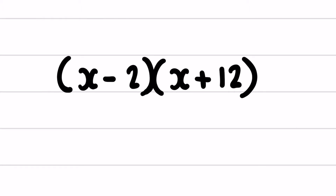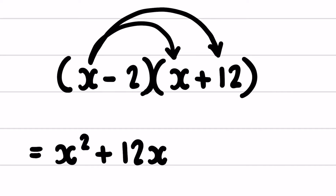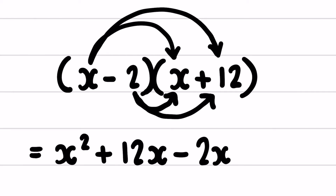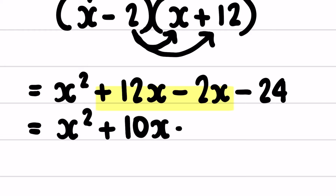Next example: (x − 2)(x + 12). So now I have a negative and a positive, but I'll just remember my multiplication rules. First times first: x times x gives me x squared. Remember, when you multiply the same bases you add the exponents. Outer times outer: x times positive 12 gives me positive 12x. Inner times inner: negative 2 times x — a negative times a positive is a negative — gives me negative 2x. And last times last: a positive times a negative is a negative; 2 times 12 is 24, so negative 24. Collecting like terms: x squared, positive 12x minus 2x is positive 10x, carry down negative 24.